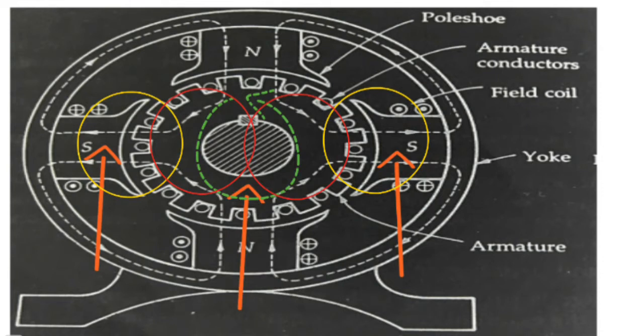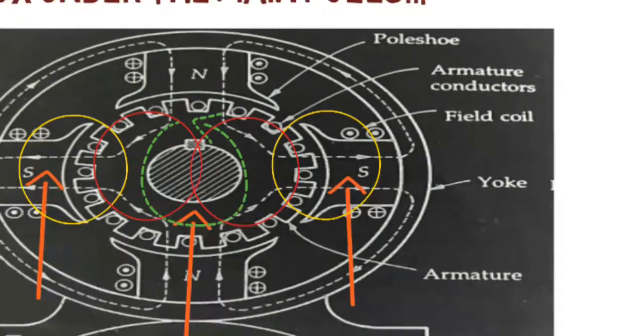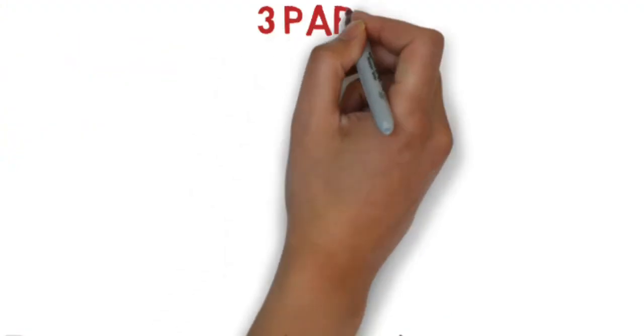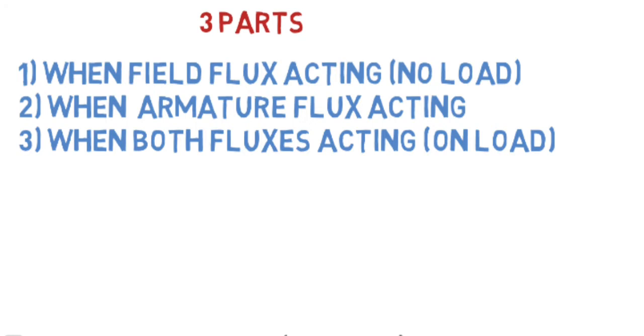For better understanding, armature reaction is divided into three parts: when field flux is acting alone, when armature flux is acting alone, and when both fluxes are acting together.